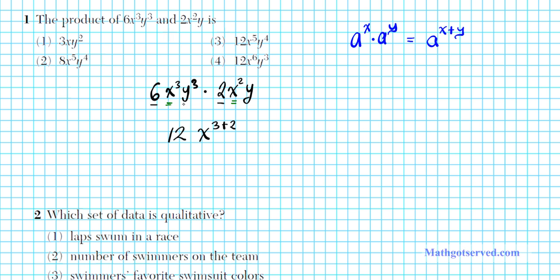Now dealing with the y variable, y³ and y, what do we do with the exponents? This y doesn't have a power, so the default power is one because y¹ is just y. Using the same product property of exponents, we add the powers: 3 plus 1. Simplifying, we get 12x⁵y⁴.